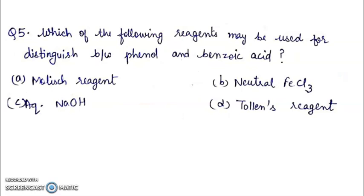Question 5: Which of the following reagents may be used to distinguish between phenol and benzoic acid? A. Molisch reagent, B. Neutral FeCl3, C. Aqueous NaOH, D. Toluene reagent. The correct answer is B, neutral FeCl3.